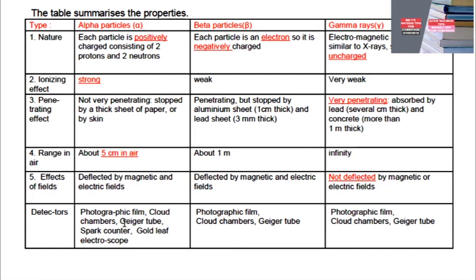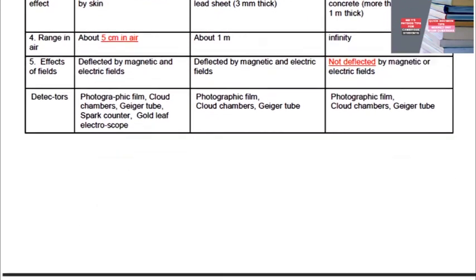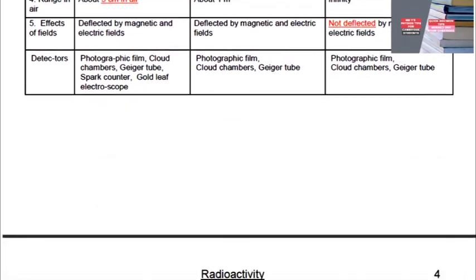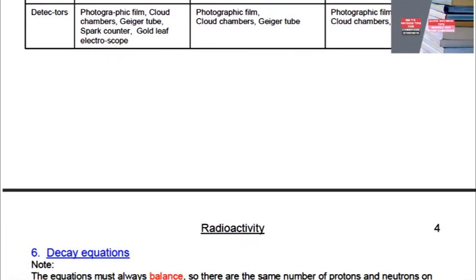For detectors: alpha particles can be detected by photographic film, cloud chambers, Geiger-Muller tube, spark counter, and gold leaf electroscope. Beta particles can be detected by photographic film, cloud chambers, and Geiger-Muller tube. Gamma rays can be detected by photographic film, cloud chamber, and Geiger-Muller tube as well. That covers all the detectors. In the next video, I'll be talking about decay equations.